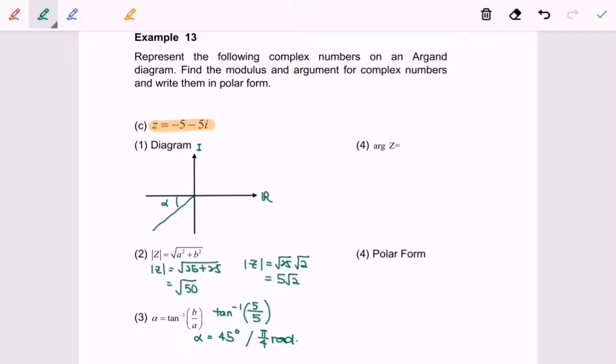Step number four, we are going to look for the argument. In this case, here will be the location for argument clockwise. This is the argument of z. Argument of z would be negative pi plus pi over 4, so argument of z will be equal to negative 3 pi over 4.